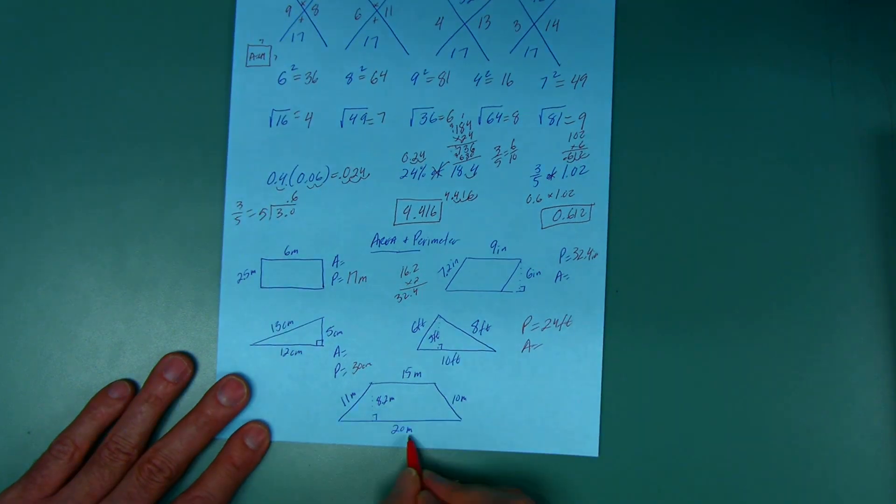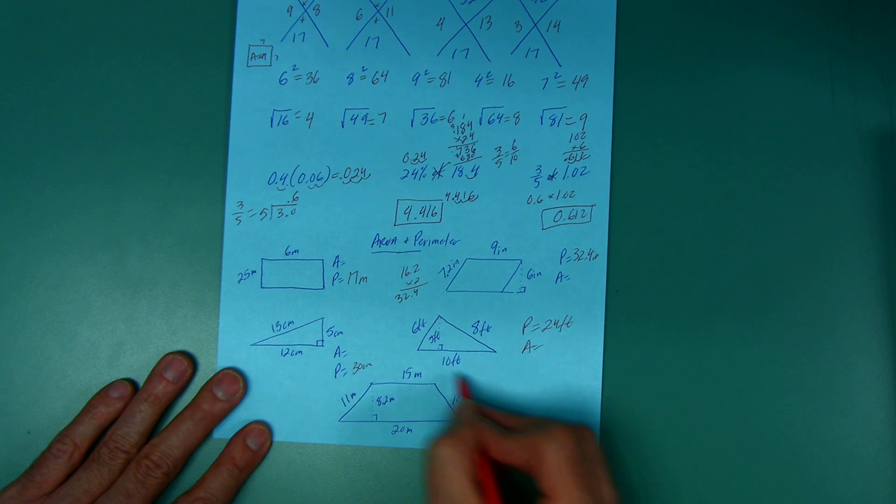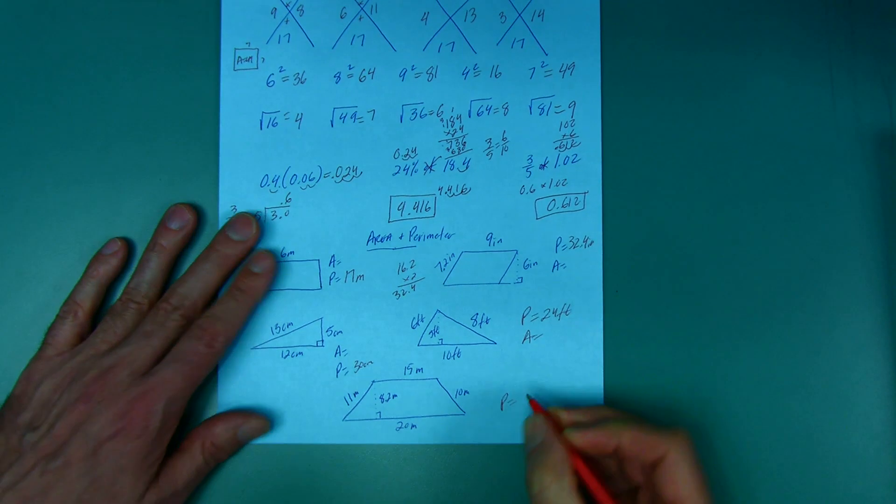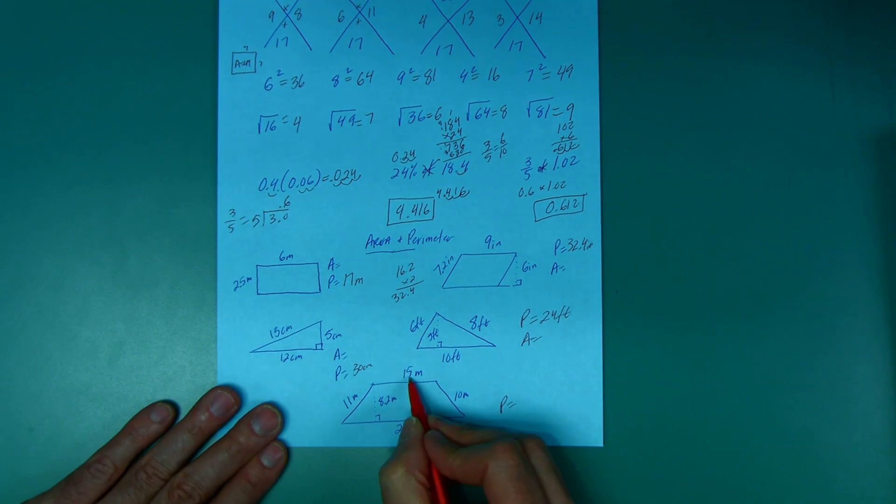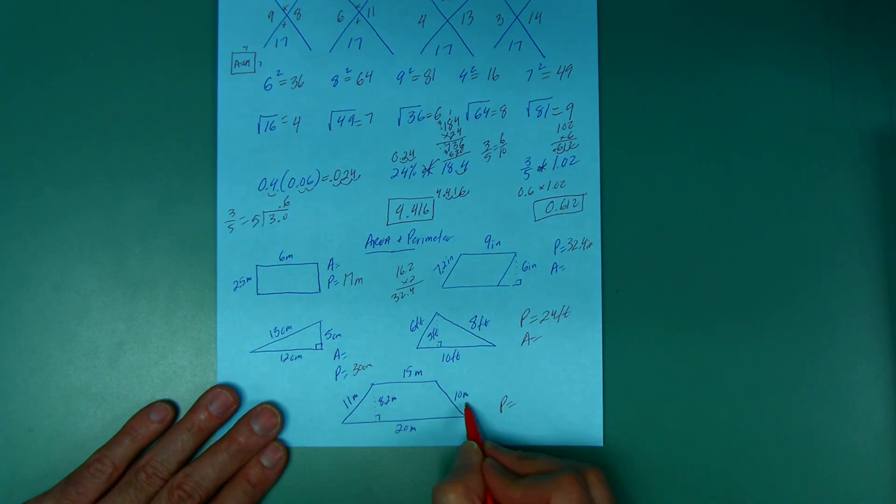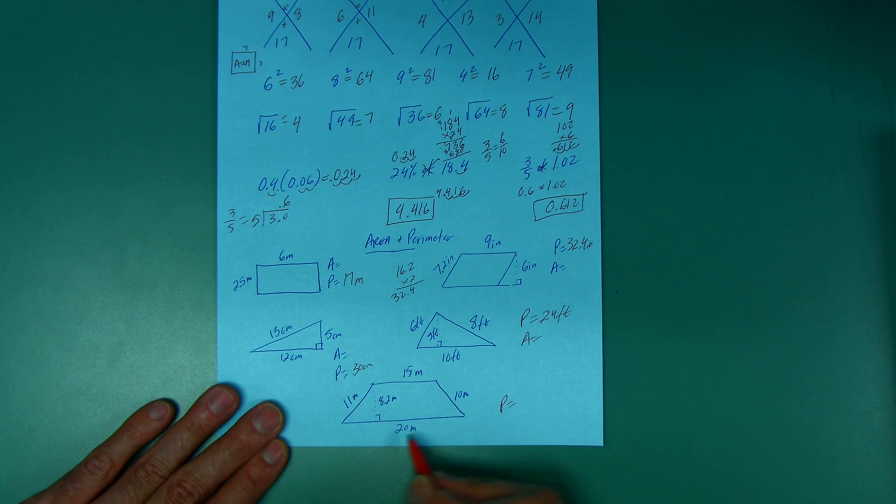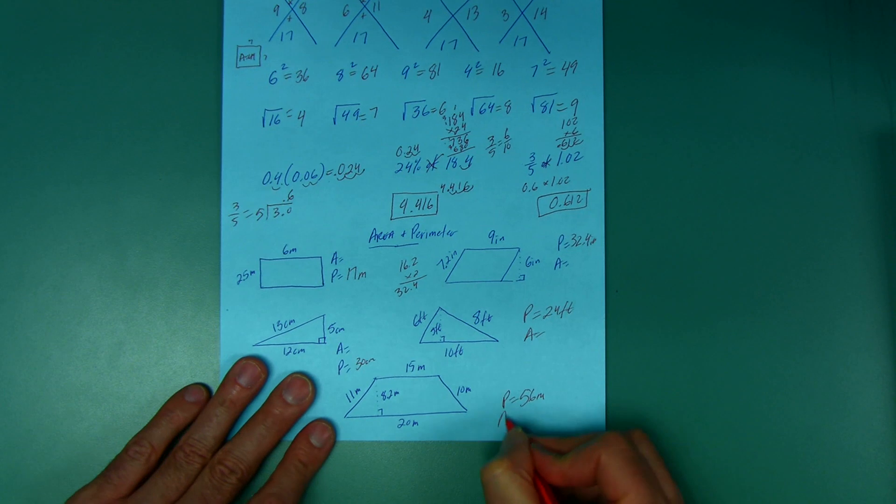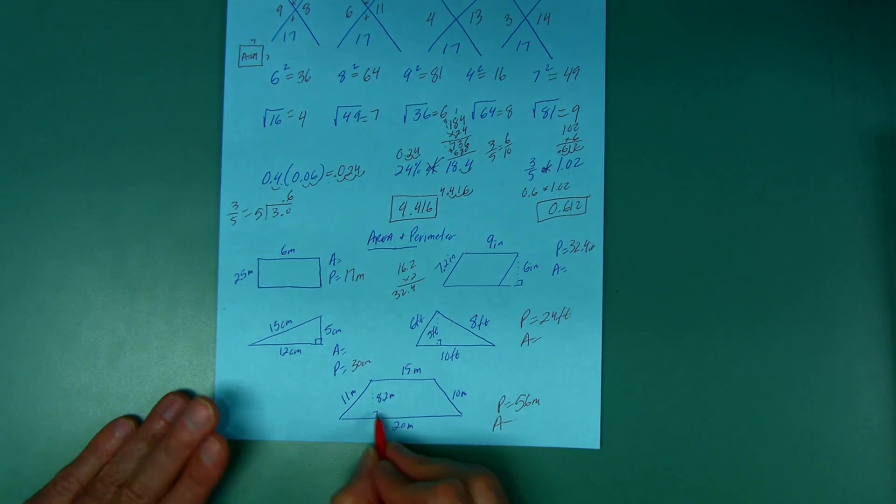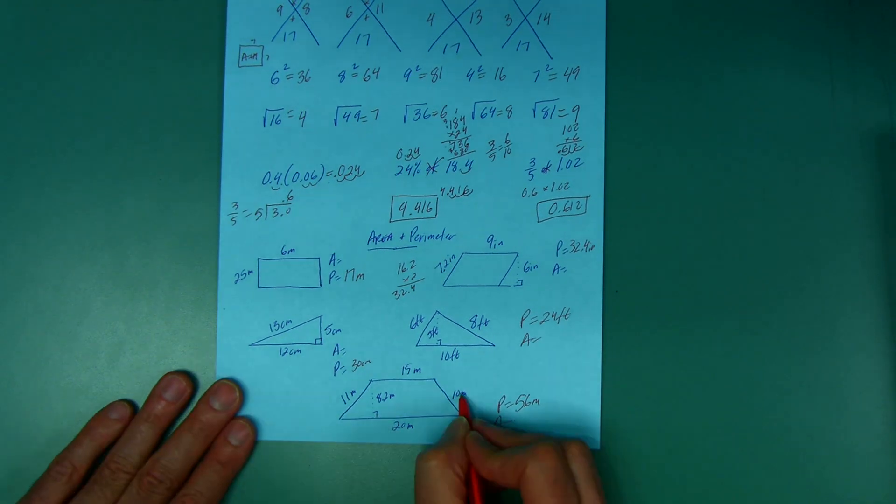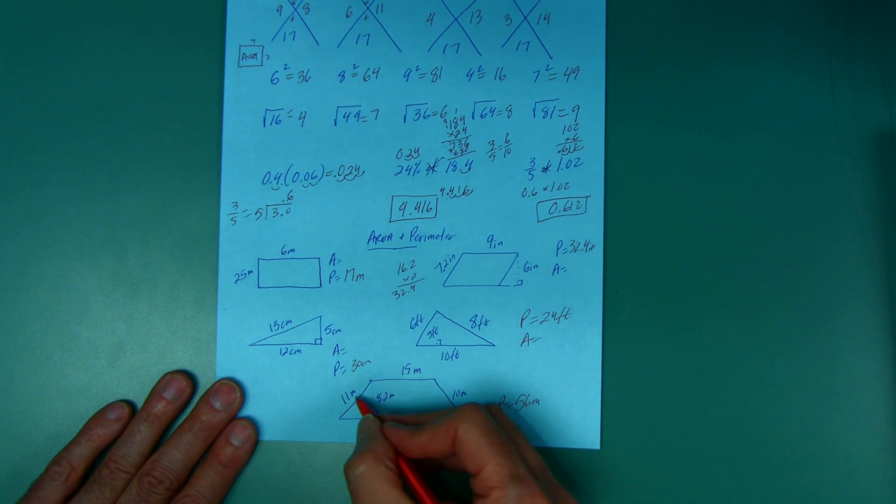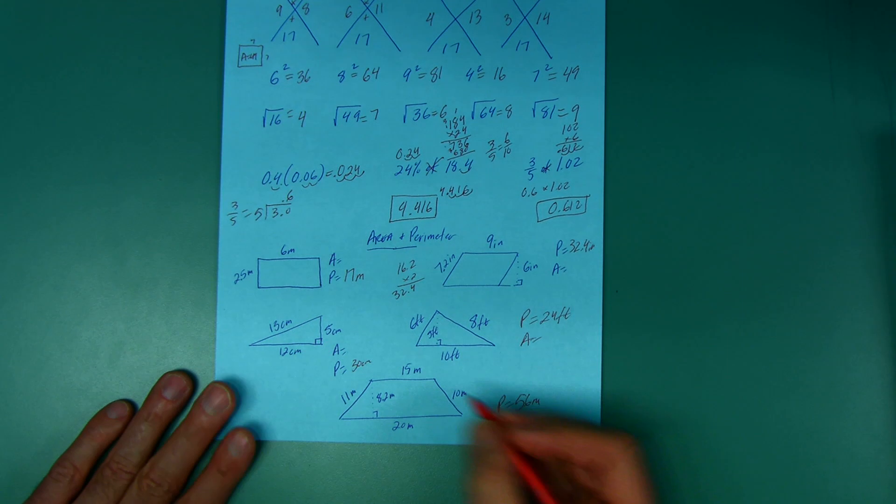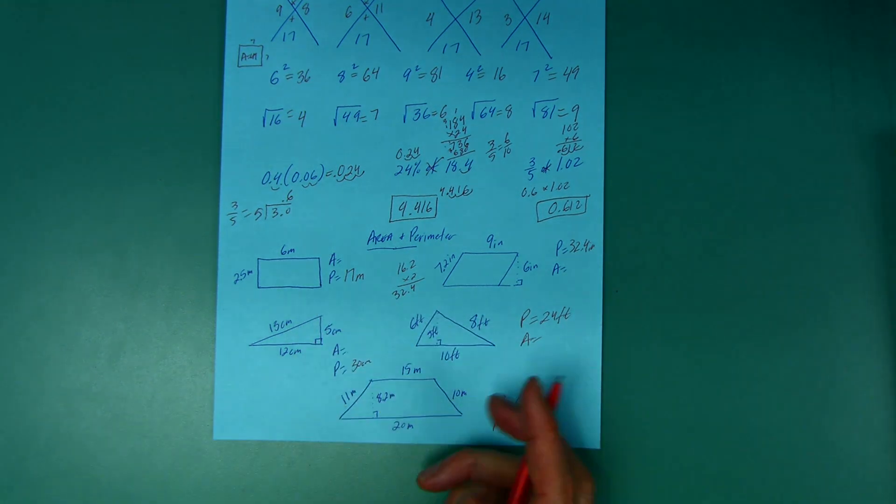And 15 and 11 and 20 and 10 - that's around the outside. I don't care about that 8.2 for the perimeter. So 11 and 15 is 26, plus 10 is 36, plus 20 is 56. And since I had that many numbers, I'm going to go backwards and make sure I get the same answer. 20 and 10 is 30, plus 15 is 45, 46, 56. Good.